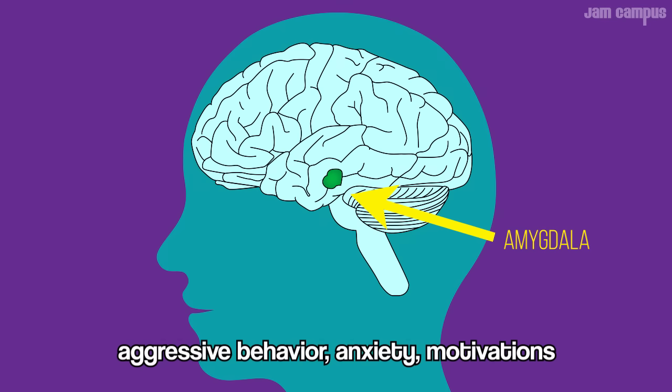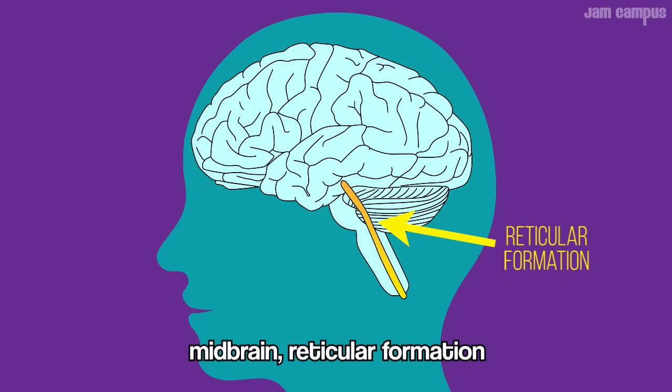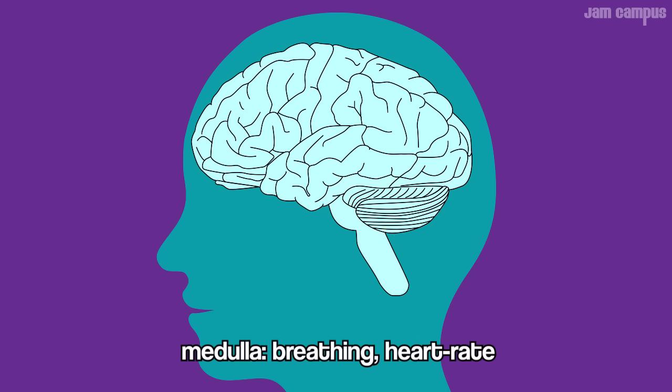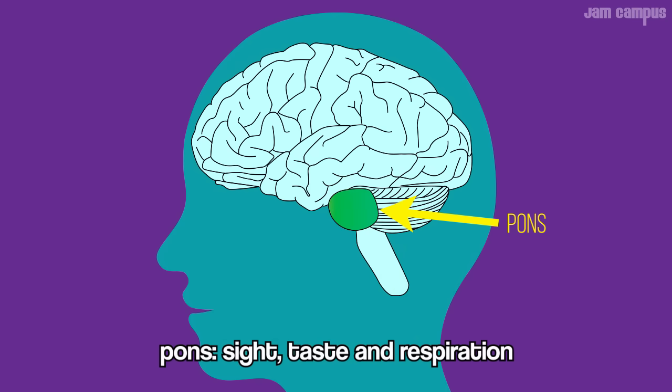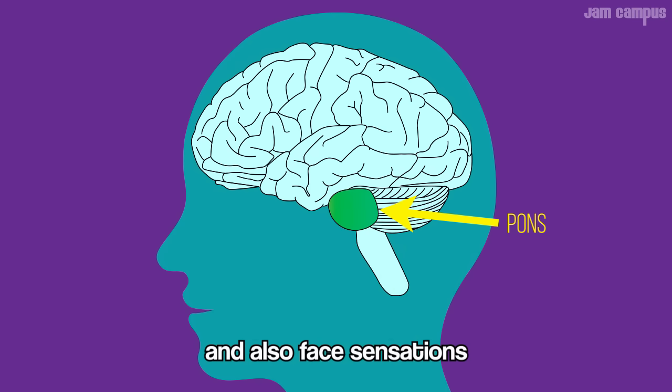Aggressive behavior, anxiety, motivation. The reticular formation handles arousal regulation. The medulla controls breathing, heart rate, pulse, and respiration. And also handles face sensations and cardiovascular functions.